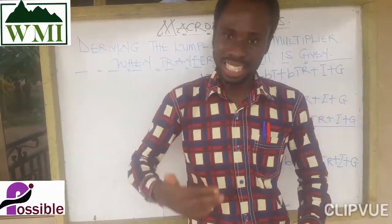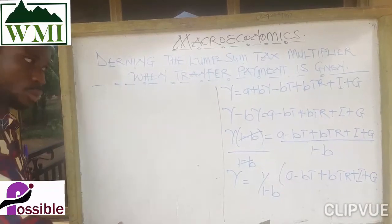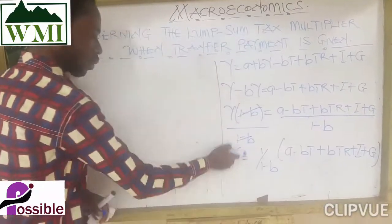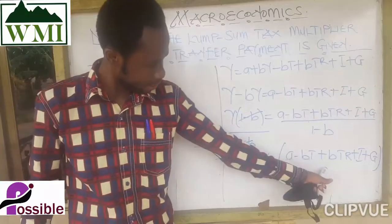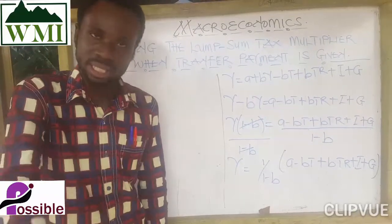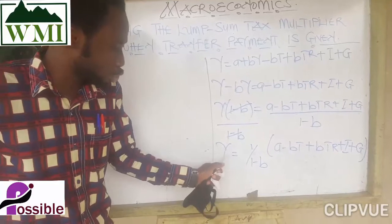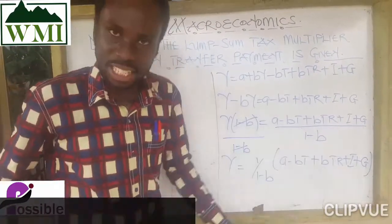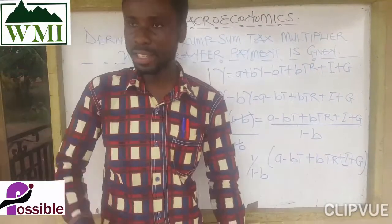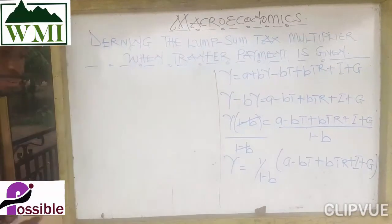Now listen carefully — the multiplier. A change in any autonomous component produces a multiplied change in income. If a question asks what will be the effect on equilibrium national income if any of these autonomous components changes, you take the change of both sides. This will be understood better when you reach the application of the multiplier, so just follow along.